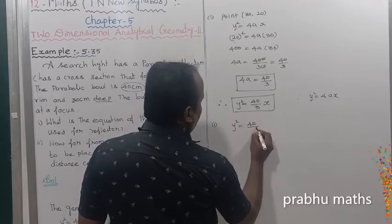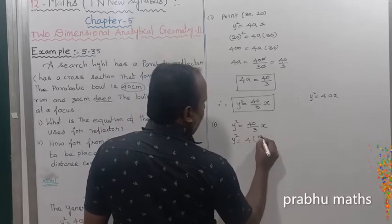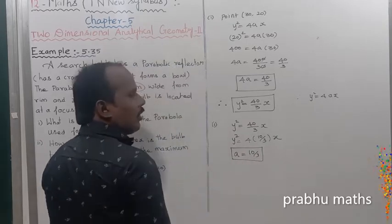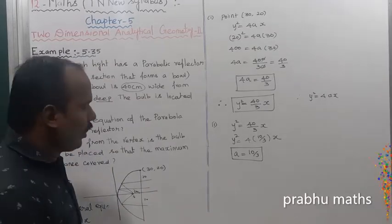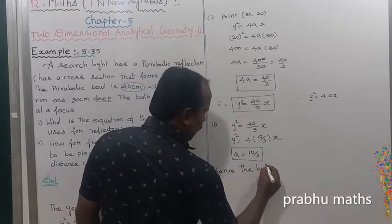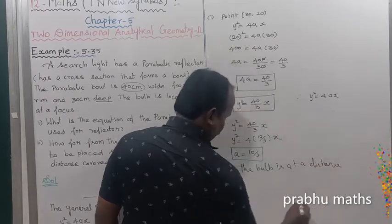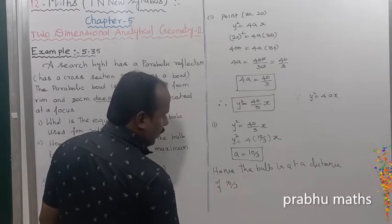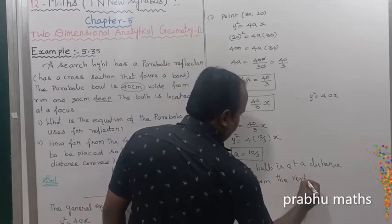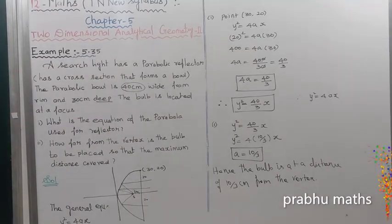y squared equals 40 divided by 3 times x, which converts to the general form 4 times 10 divided by 3 times x. So A equals 10 divided by 3. Since A is the focus point and the bulb is located at the focus, hence the bulb is at a distance of 10 by 3 centimeters from the vertex.